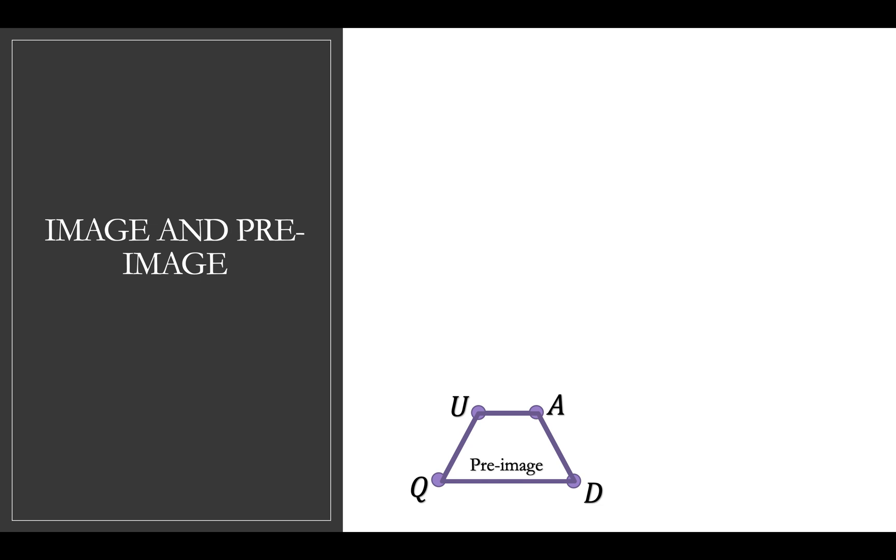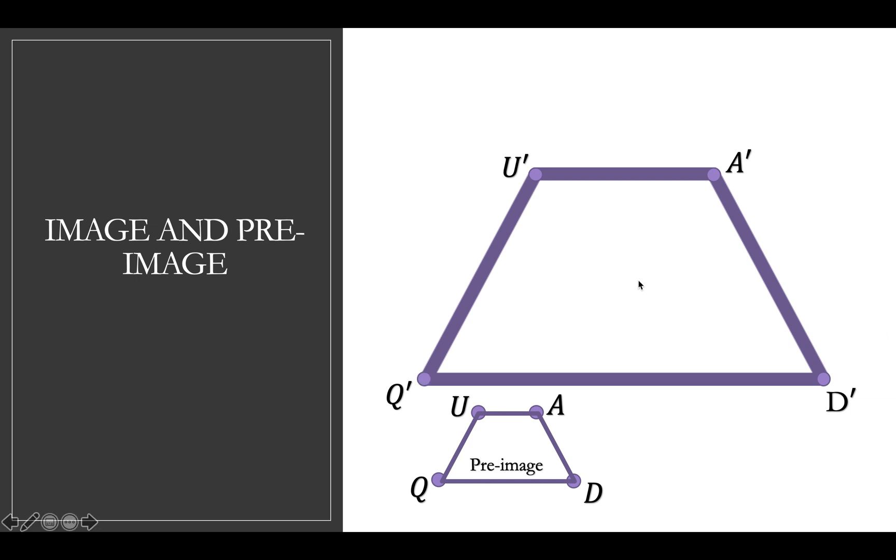So then, I'm going to do something to it. In this case, I'm going to move it up and to the right and make it bigger. So here we go, it's going to go up to the right, get bigger. And now, it's got these new points. And you can notice that they're not just Q anymore, or U, or A, or D. It's Q, but with a little tick mark next to it, and U with a little tick mark. And you might be wondering, well, what does that mean?